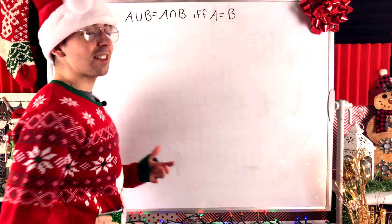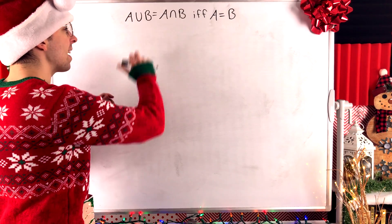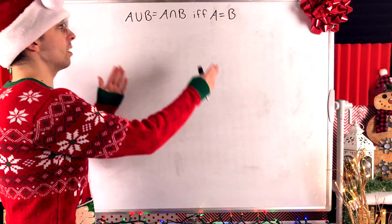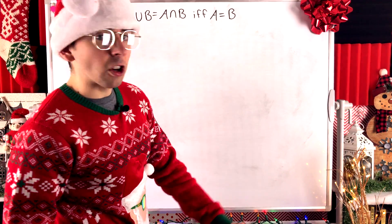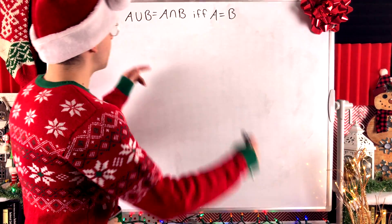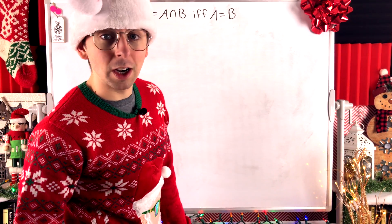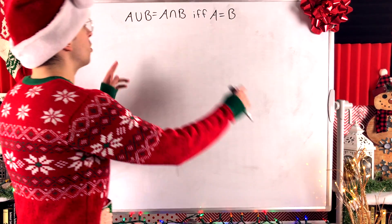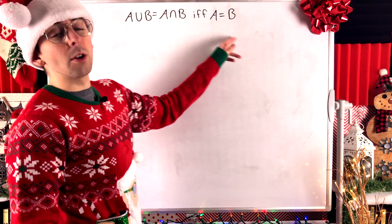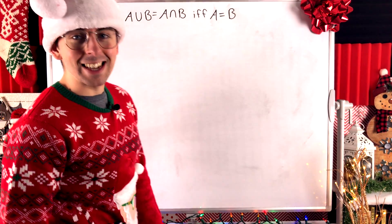Notice this is a biconditional statement. We're saying A union B equals A intersect B if and only if A equals B. So to prove this, we need to show that if two sets A and B are equal, then their union is equal to their intersection — a pretty trivial direction of the proof. And then we also need to show that if the union of two sets is equal to their intersection, those sets must be equal. Also a pretty easy direction.